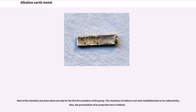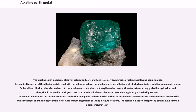Most of the chemistry has been observed only for the first five members of the group. The chemistry of radium is not well established due to its radioactivity, thus the presentation of its properties here is limited. The alkaline earth metals are all silver-colored and soft, and have relatively low densities, melting points, and boiling points. In chemical terms, all of the alkaline earth metals react with the halogens to form the alkaline earth metal halides, all of which are ionic crystalline compounds, except for beryllium chloride, which is covalent.